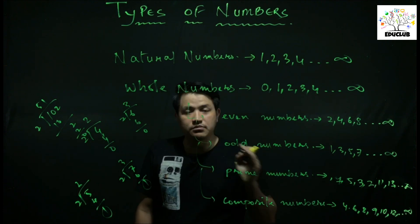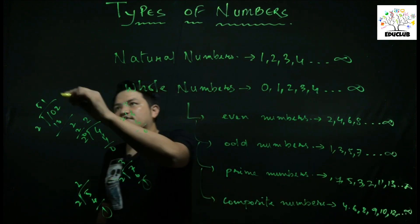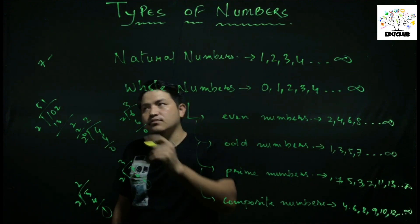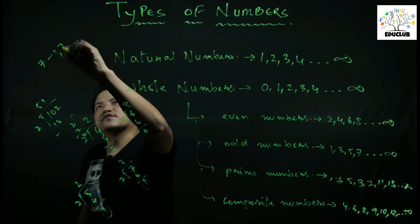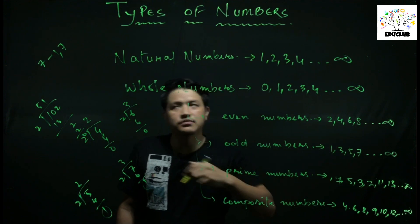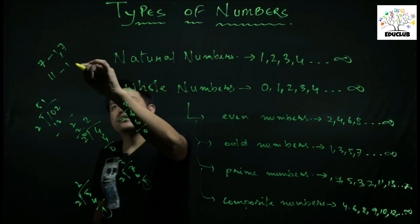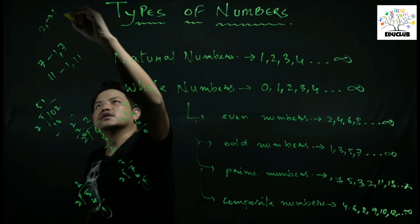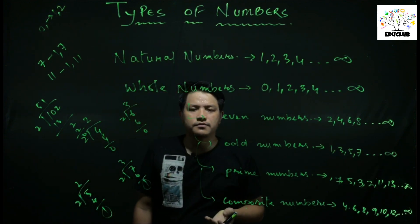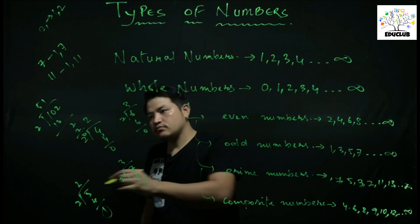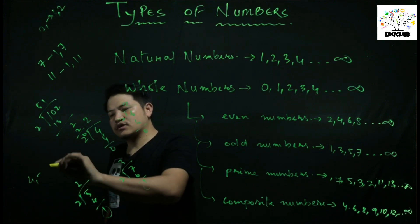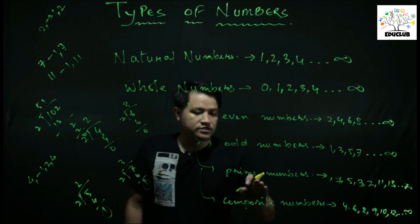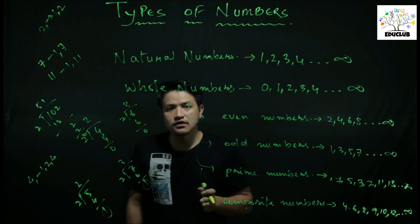Prime numbers are numbers which have only 2 factors: 1 and itself. For example, 7 is divisible only by 1 and 7 — those are its only factors. Similarly, 11 is divisible only by 1 and 11. Composite number example: 4 has factors 1, 2, and 4 — because 1×4=4 and 2×2=4. So a prime number has only two factors, while a composite number has more than two factors.